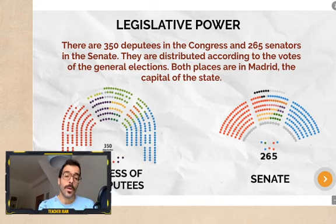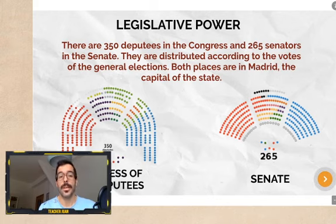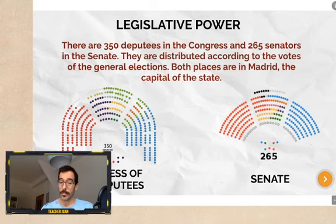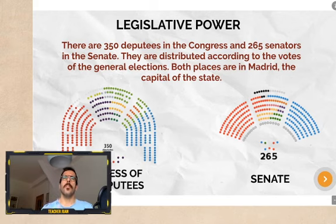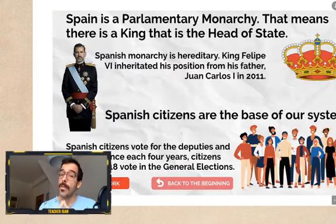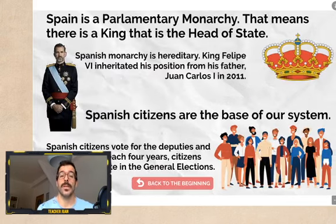Each color represents a different political party, and they are distributed according to the votes of the general elections. We can find both places in Madrid — you know the Congress of the Deputies because we visited it on our last trip to Madrid. You remember those two lions on the main gate? Yes, that was the Congress.